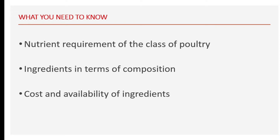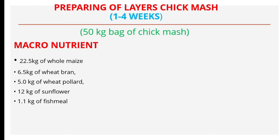First, we are going to look at preparing layers chick mash. We intend to formulate a 50 kg bag of chick mash. Layers chicks require feed with a digestible crude protein (DCP), which is the number one factor to calculate during feed formulation. I have done the calculation already and provided the quantity and volume of ingredients needed. It requires a DCP of between 18 to 20 percent, and feed additives such as amino acids are important to maintain a balanced diet for fast growth.